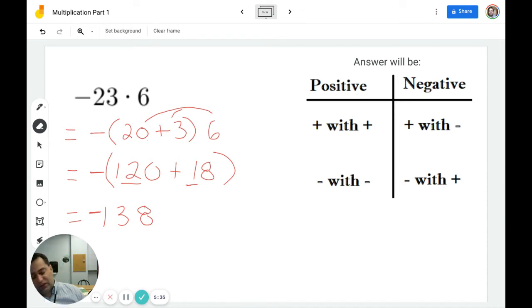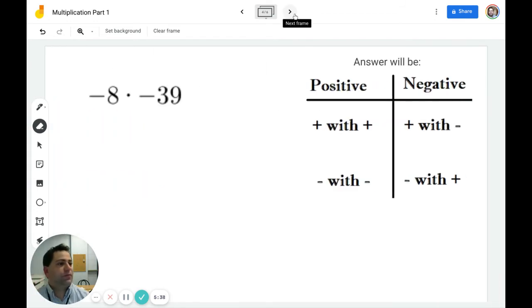Let's try another example. Negative 8 times negative 39. In this example, I have a negative times a negative. And I know when I have a negative times a negative, the answer is going to be positive.